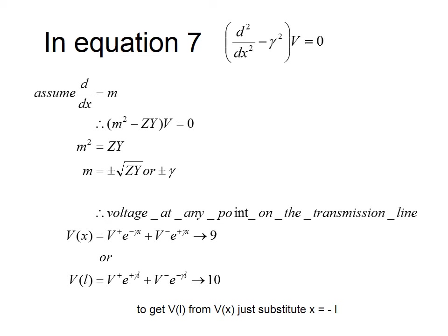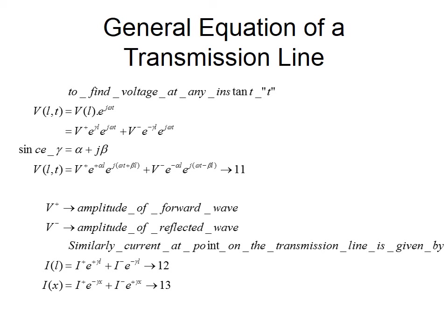To measure voltage at any point moving from the load toward the source, replace x with −L in equation 9. This gives V(L) = V⁺·e^(+γL) + V⁻·e^(−γL) as equation 10. Note that equations 9 and 10 differ by the change of sign in the exponential terms. To find voltage at any point at any instant t, multiply V(L) by e^(jωt).